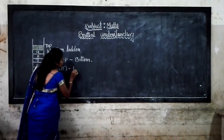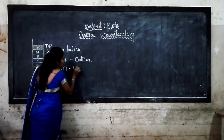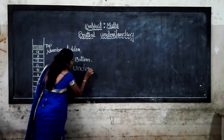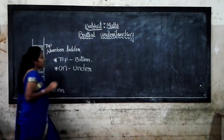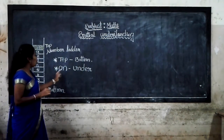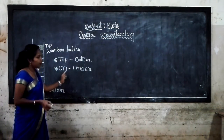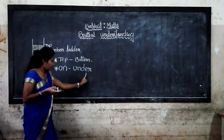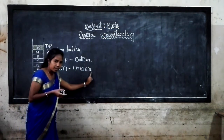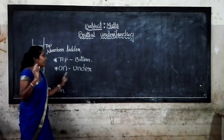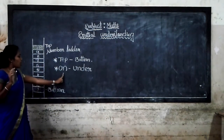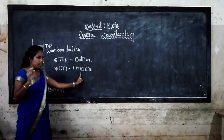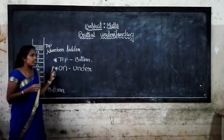The opposite of on is under. That is U-N-D-E-R. Spell it out: O-N, on; U-N-D-E-R, under. The opposite of on is under, and the opposite of under is on.